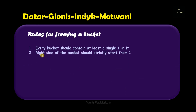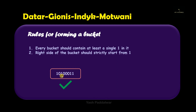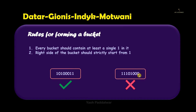The second rule says that the rightmost bit of the bucket should always be a one — strictly. Otherwise the bucket will not be valid. In the first example, the rightmost bit is one, hence it is a valid bucket. In the second example, the rightmost bit is zero, hence this is not a valid bucket.